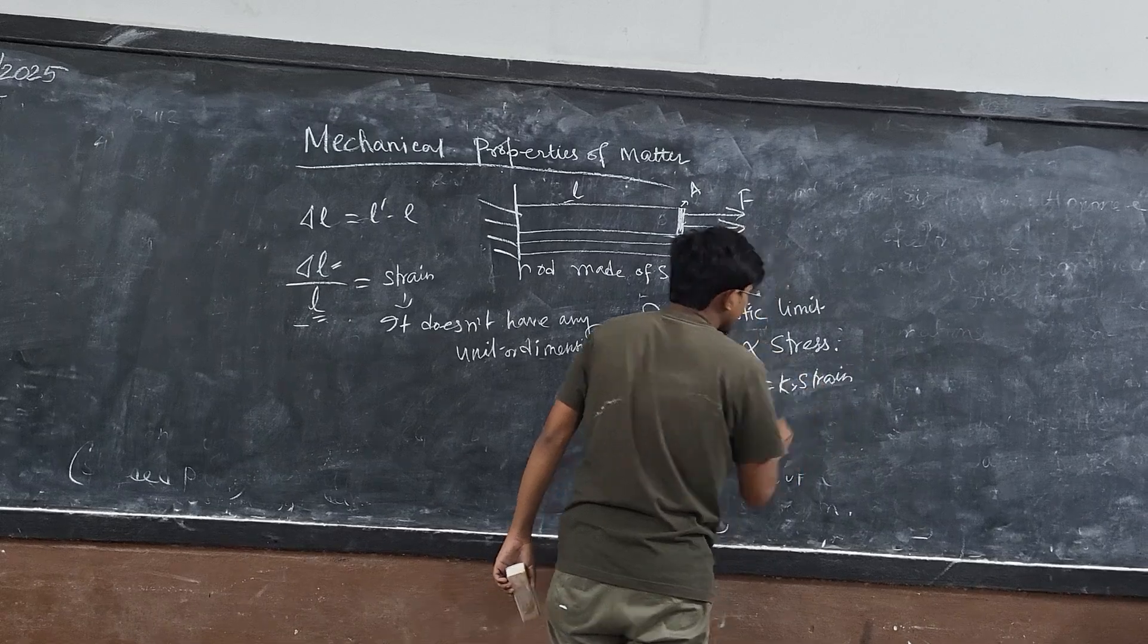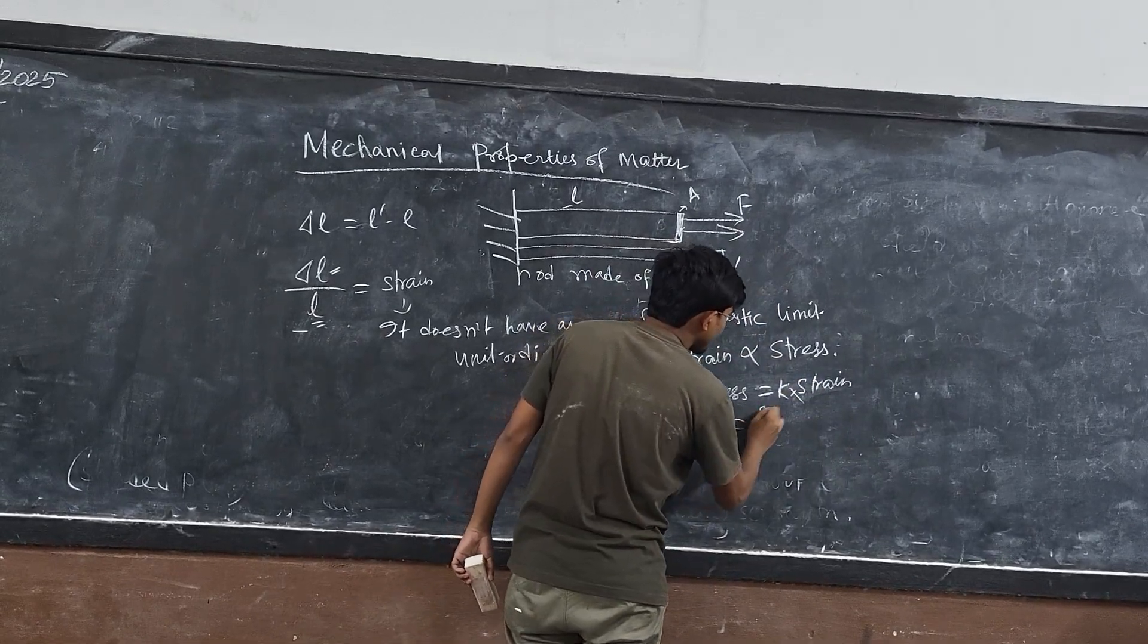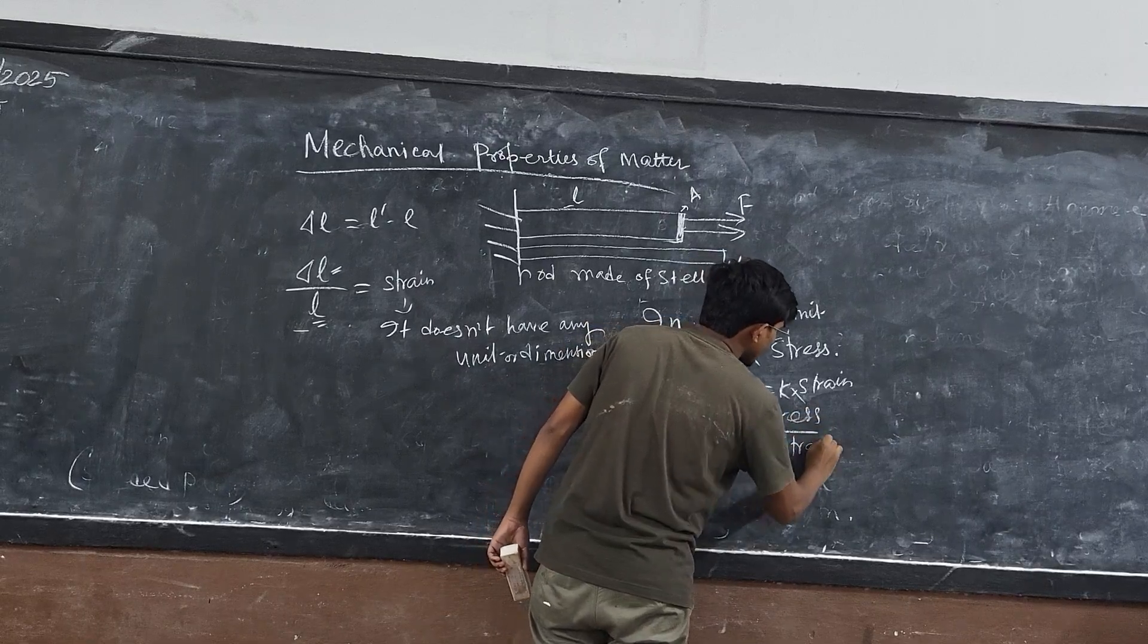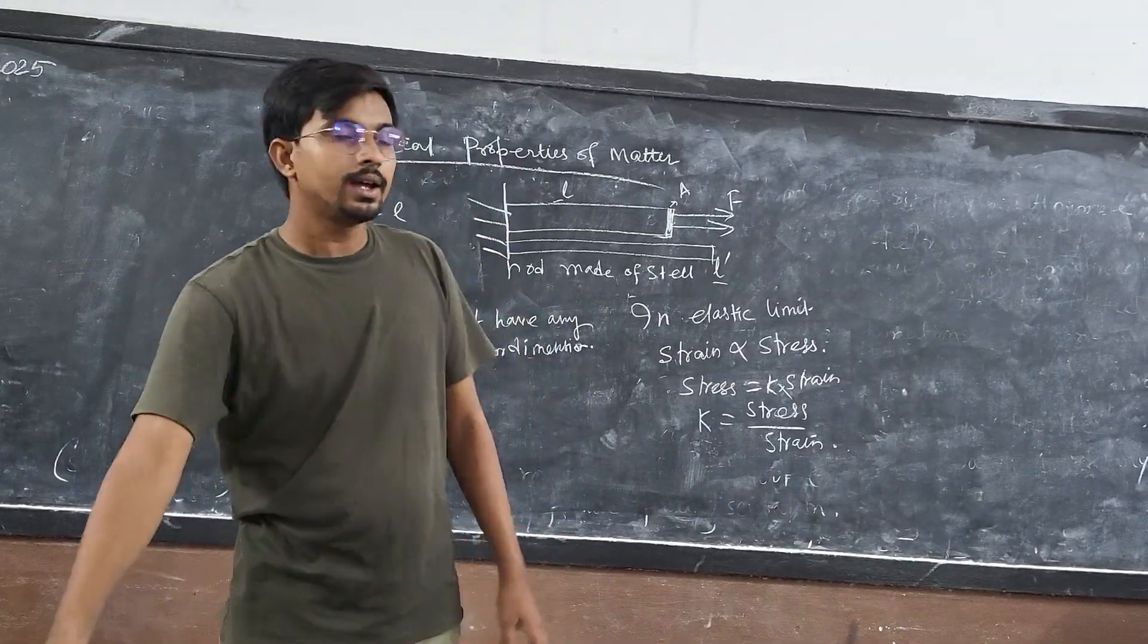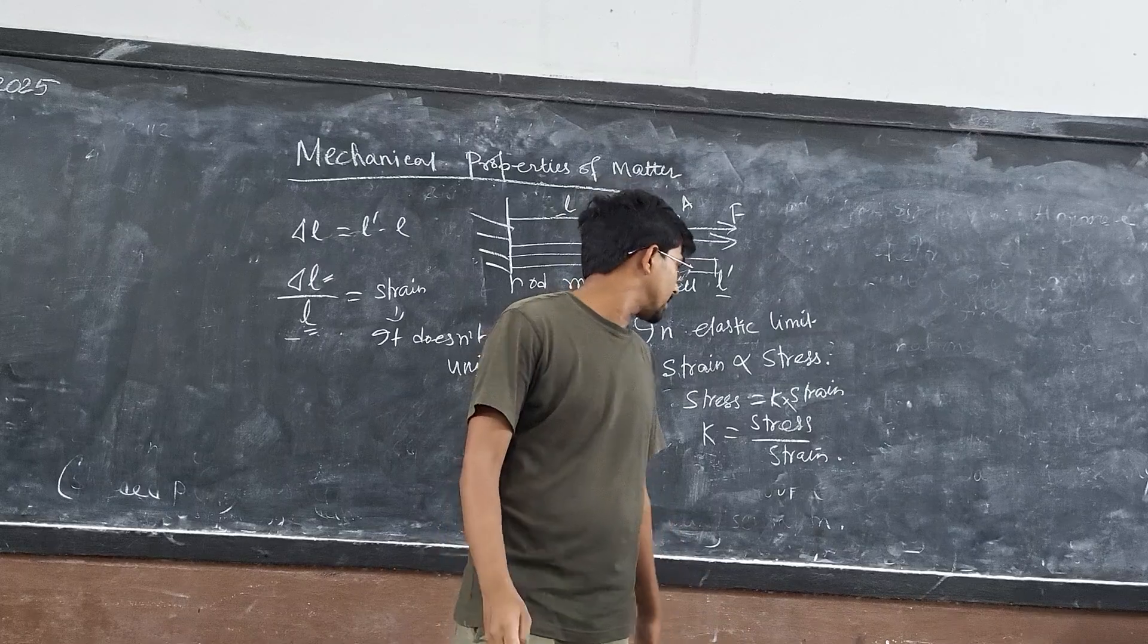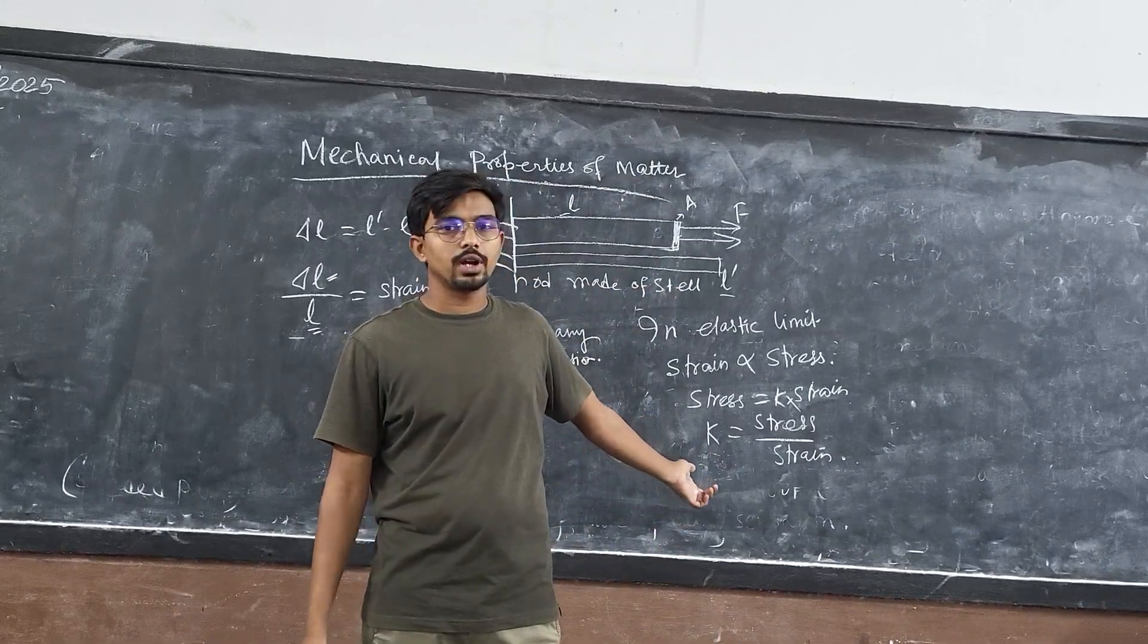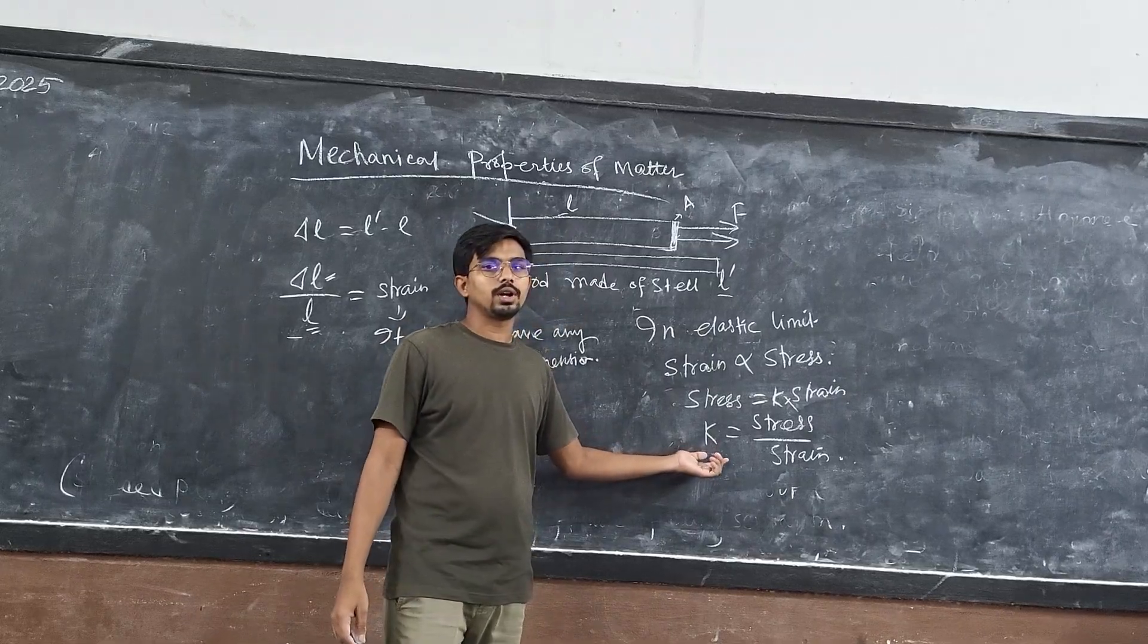It will be easier for this relation. Here you can write stress equals to k times strain. Here k is the constant of proportionality that in elasticity chapter or in mechanical properties of matter you will say here this is the modulus of elasticity.